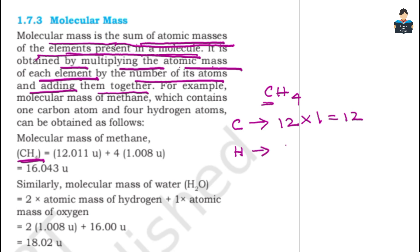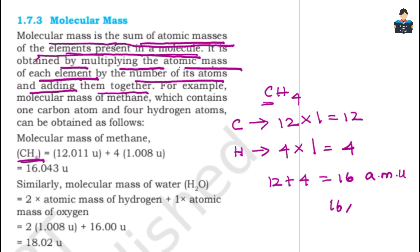Hydrogen has 4 atoms, and the atomic mass of hydrogen is 1, so 4 × 1 = 4. Adding them: 12 + 4 = 16. So the molecular mass of methane (CH4) is 16 u.